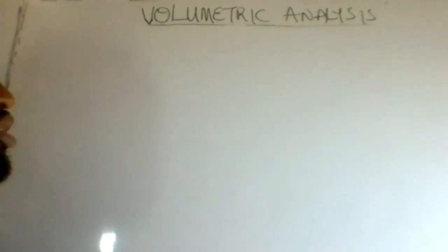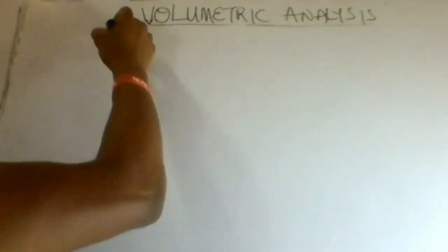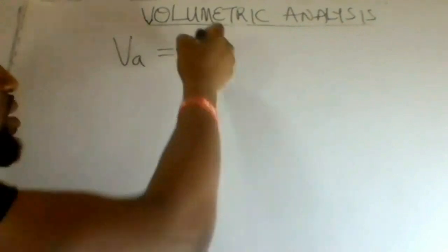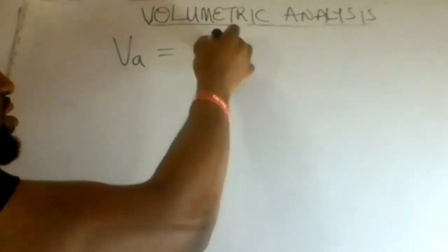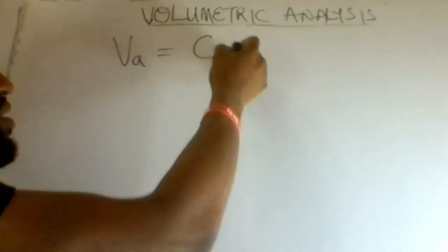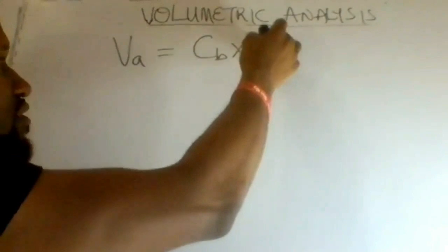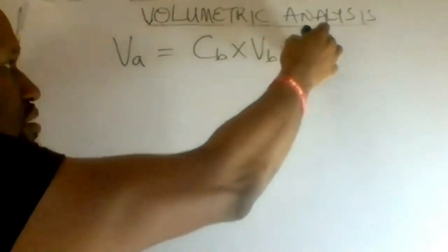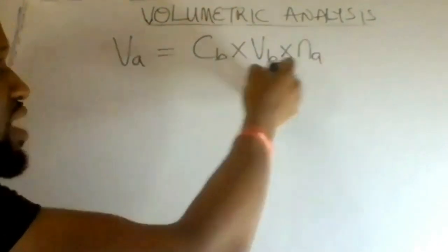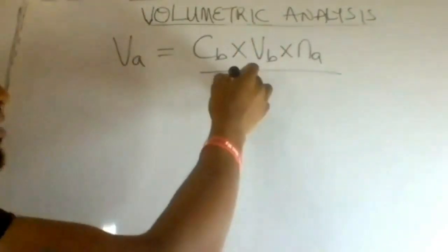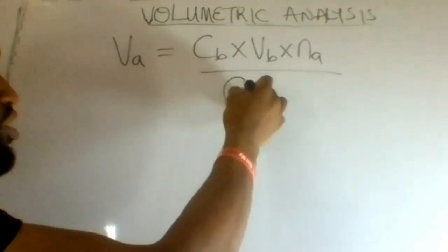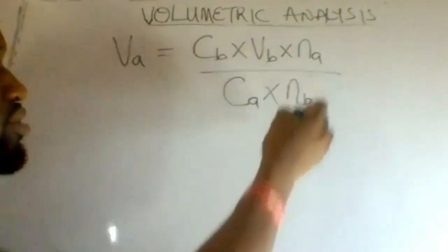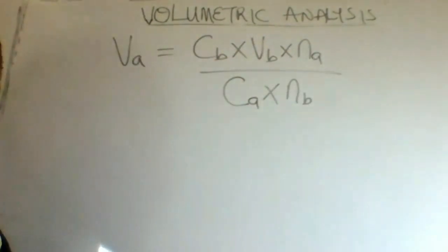We know that the volume of acid is given by: concentration of base multiplied by volume of base multiplied by number of moles of acid, divided by concentration of acid multiplied by number of moles of base.